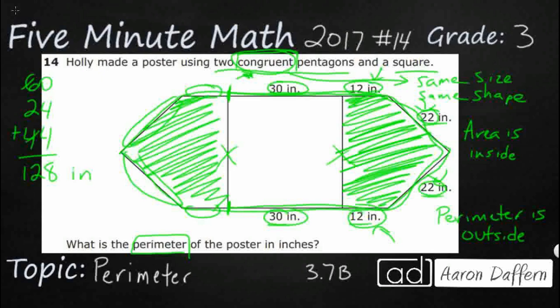If the problem says congruent, now we know. Same size, same shape. So if this short side on top is 12 inches, guess what this is? 12 inches. And if the bottom side is 12 inches, guess what that is? 12 inches. And these two diagonals are going to be 22 inches each. And now we have all of our missing measurements.